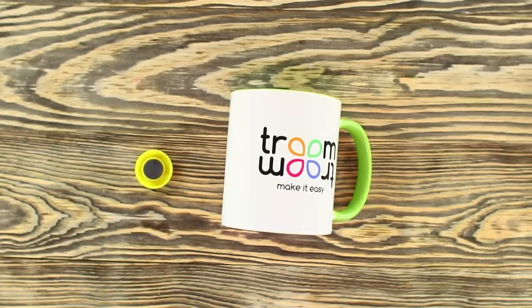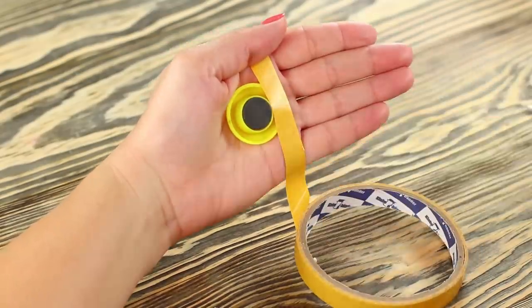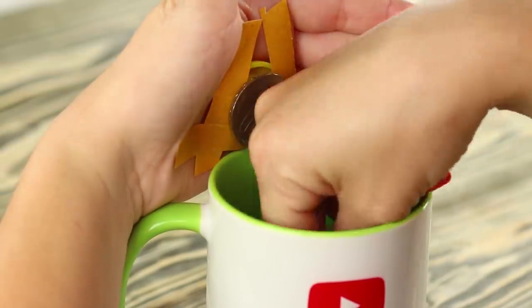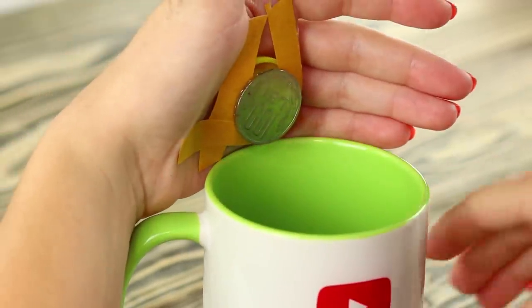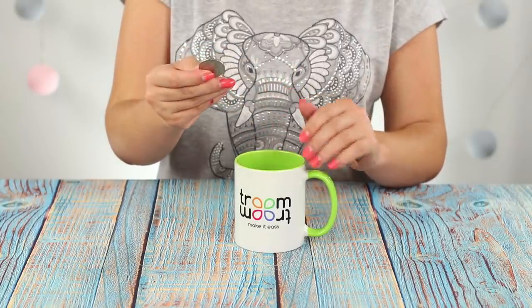To repeat the trick, you will need a mug, a magnet, adhesive tape, and a coin. Using scotch tape, attach the magnet to the palm of your hand. Allegedly throwing the coin into a mug, catch it on a magnet. Then, pretending that you are pulling a coin out of the mug, imperceptibly remove it from the palm of your hand.